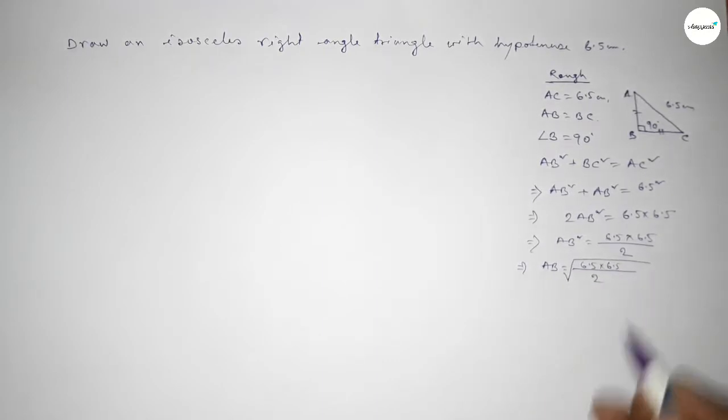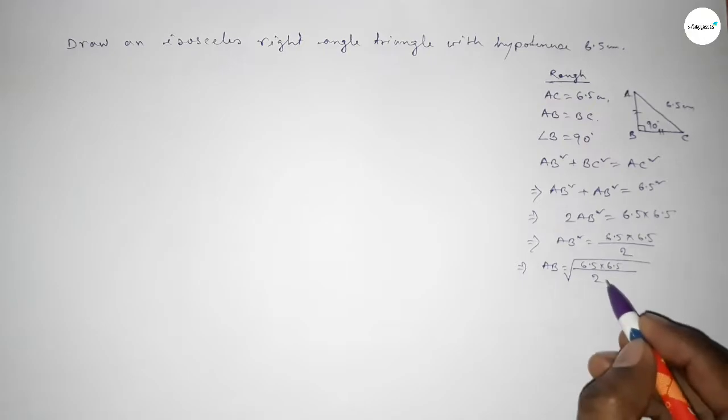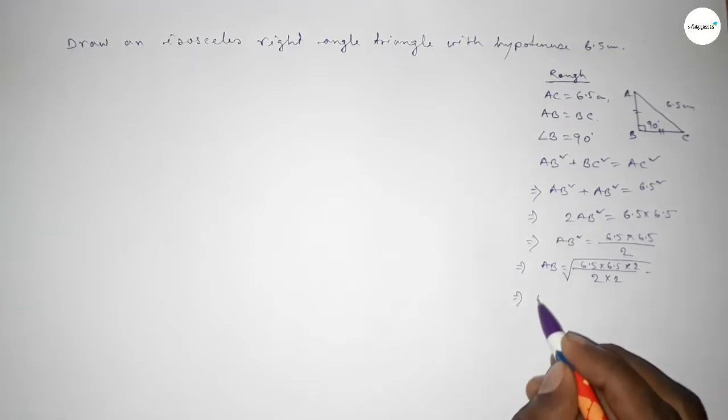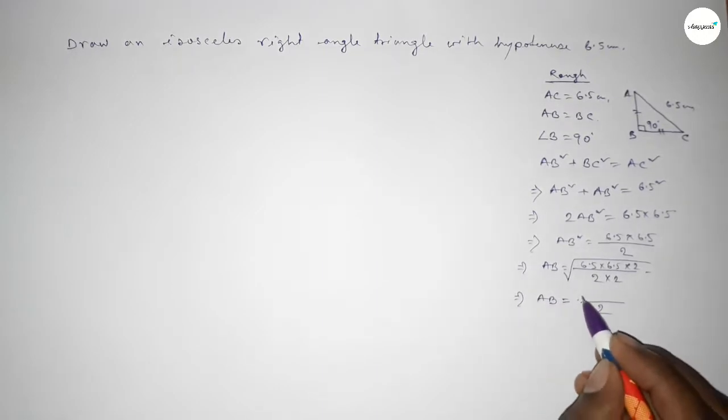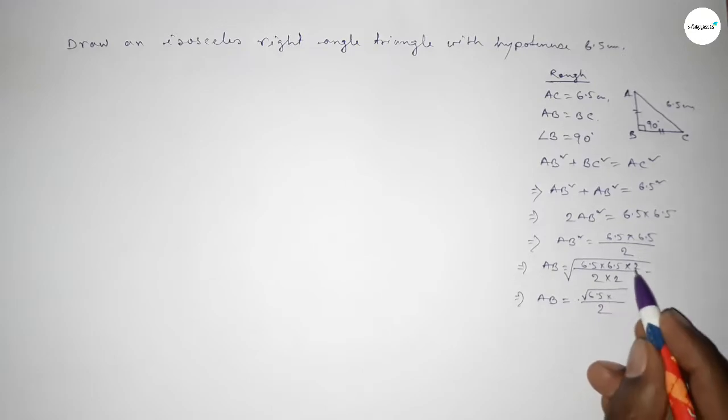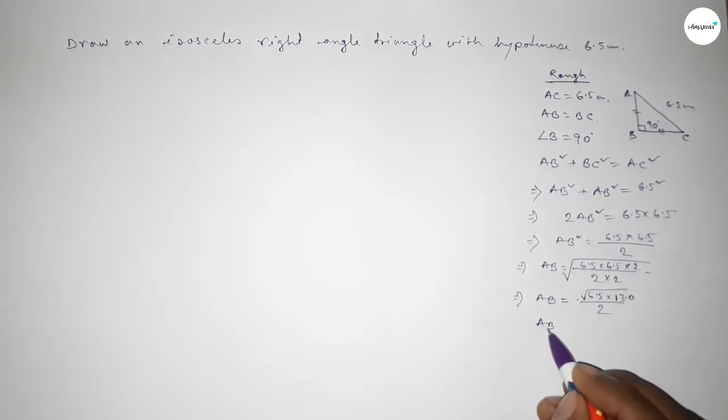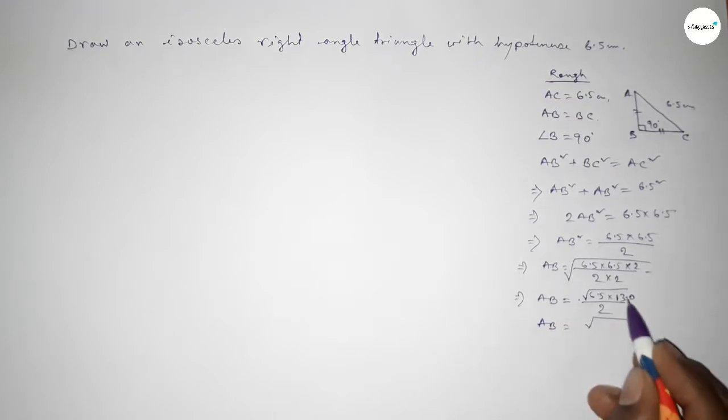6.5 into 6.5 over 2. Now we have to remove the square root from 2, so multiplying up and down by 2. So AB equal to this is 6.5, so this is 6.5 into this is 13.0, again multiplying...